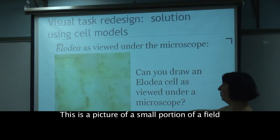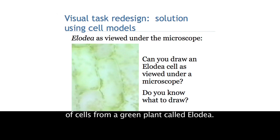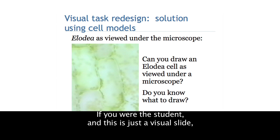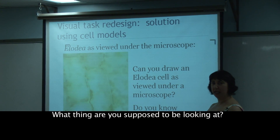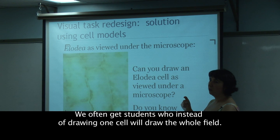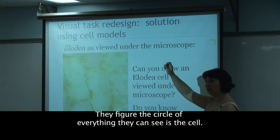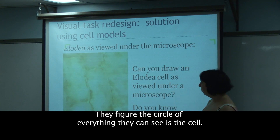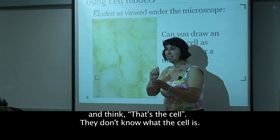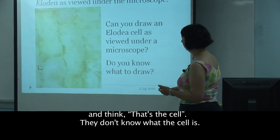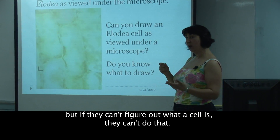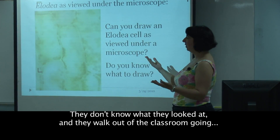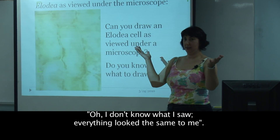This is a picture of a small portion of a field of cells from a green plant called Elodea. If you were the student and this is just a visual slide, would you know what to draw? Would you know what a cell was - what thing are you supposed to be looking at? We often get students who instead of drawing one cell will draw the whole field, or they'll find one tiny little dot and think that's the cell. So they don't know what a cell is and have no idea what to draw, and they walk out saying 'I don't know what I saw.'